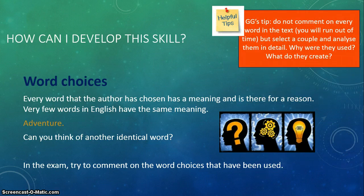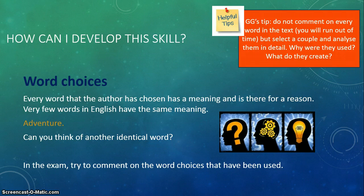I have a tip for you — Gigi's tip. In the exam, you will not have the time to comment on every word in the text. But you need to select a couple and analyze them in great detail. Ask: why are they used? What do they create? What effect do they have? Don't try to analyze every single word — it's just going to bore the examiner. Select a couple, then think about the bigger picture: why are they used, what do they mean, what do they create, and how do they make you feel? These are the sorts of things you want to show the examiner.